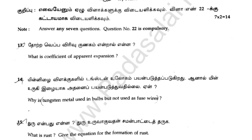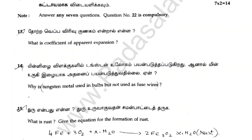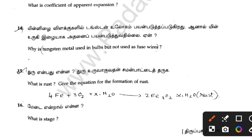What is the coefficient of apparent expansion? This is very important and easy. What is the tungsten metal used in a bulb but not used as a fused wire? What is rust? It is very important and easy.